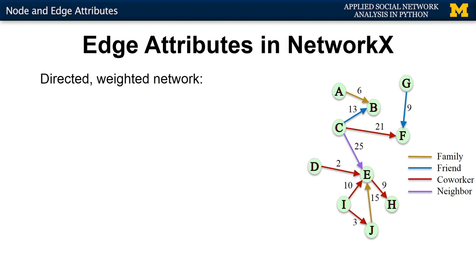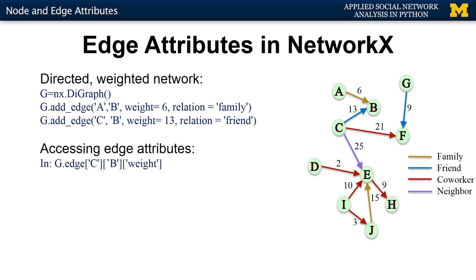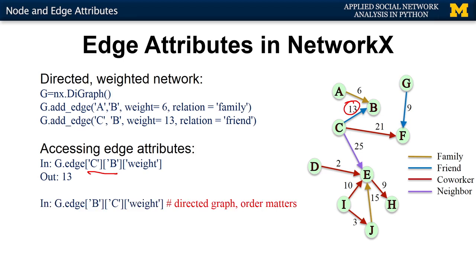What if you have a directed graph? We would use the directed graph class and add the edges in the same way as before, accessing attributes the same way. Here you would be asking for the weight of edge c-b, which is 13. But if you switch the order and ask for the weight of edge b-c, you would get an error because that edge doesn't exist. In a directed graph, the order matters both when adding and when accessing edge attributes.